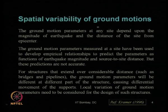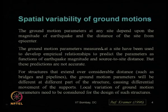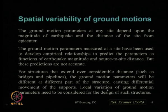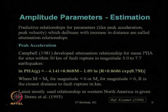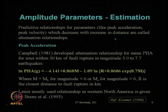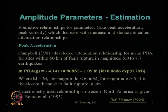That variability of ground motion is most important for the design of any structure at a particular site — how it varies with respect to magnitude and with respect to the site-to-source distance. In that connection, we mentioned what is known as the attenuation relationship: predictive parameters like peak acceleration, peak velocity, or intensity, and how they decrease with increase in distance. Those are the attenuation relationships. We have seen the peak acceleration attenuation relationship.